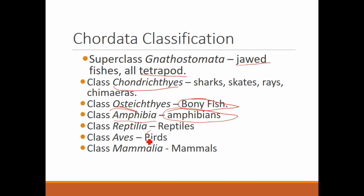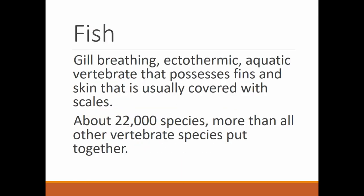Class Aves are the birds — that's probably where the word 'aviation' comes from, as you can see the same root. And then class Mammalia — of course those are the mammals. We are hopefully pretty aware of what a mammal is: warm-blooded, covered in hair, placental, and we nurse our young.